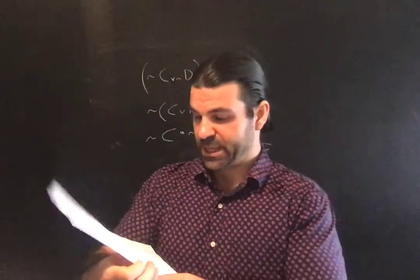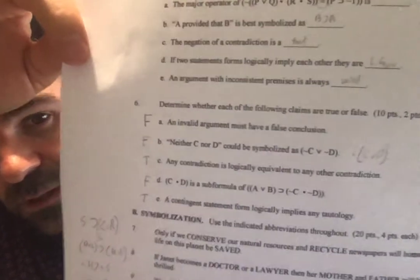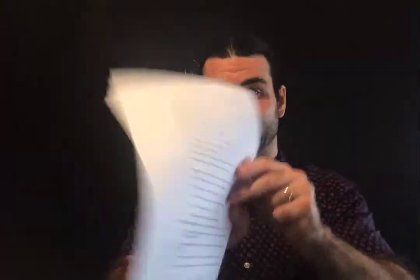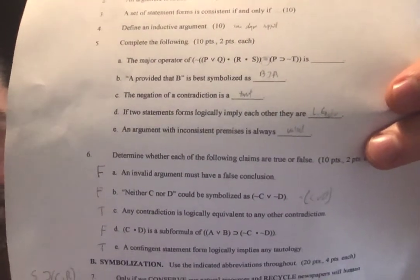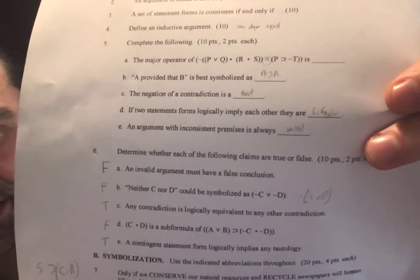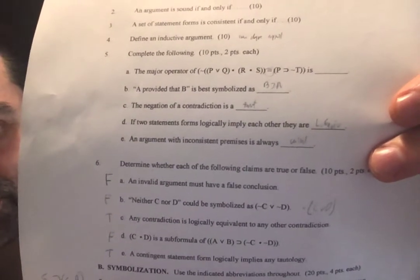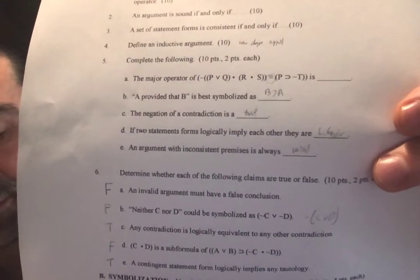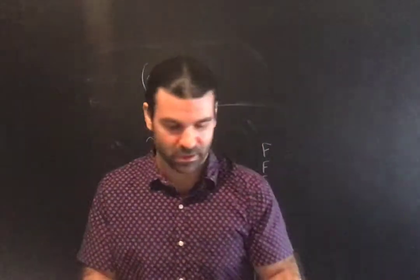6D: C and D is a sub-formula of the longer formula. That is false — it is not a sub-formula. In the construction of the consequent of the longer formula, 'not C and not D,' you never put C and D together. You took C and negated it, took D and negated it, then conjoined those two negations. So C and D is not a sub-formula. False.